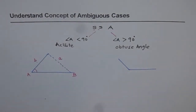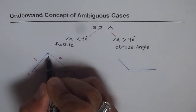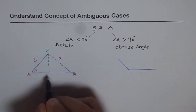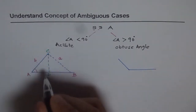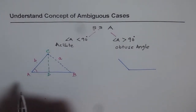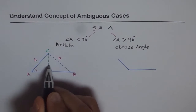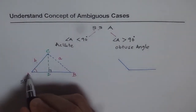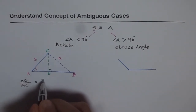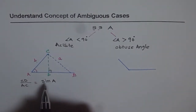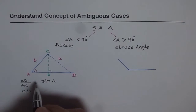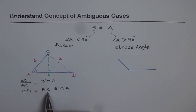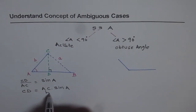In the acute angle case as shown here, if I drop a perpendicular from vertex C — let us say this point is D — what should be the length of this perpendicular? From trigonometric relations, we know CD is opposite to angle A. Therefore, we can write CD over AC, which is the hypotenuse in this case, equals sine of angle A. That gives us CD equals AC times sine A.